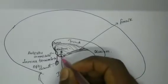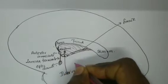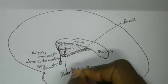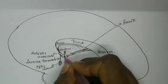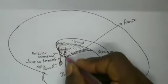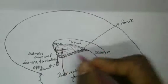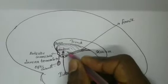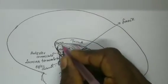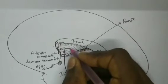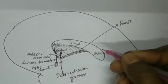The two lateral ventricles are communicated with the third ventricle by means of the interventricular foramen. The CSF which is formed inside the lateral ventricle flows out through this foramen to reach the third ventricle.